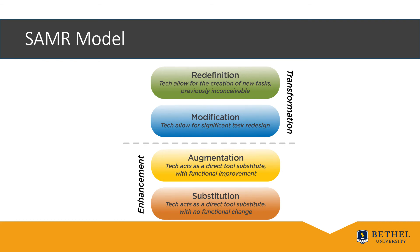Let's take a look at the SAMR model. The SAMR model is a way to represent the different outcomes and purposes of using technology tools. The bottom of the diagram is considered the most basic form of tech integration. As you move up the diagram, the use of technology represents more and more advanced integration. Sometimes you want to be at the substitution level — that is not necessarily bad. The bottom two, substitution and augmentation, really have enhancements in mind, meaning we're taking something we did before and enhancing it with technology. Transformation at the top of the SAMR model includes modification and redefinition, which are about truly transforming the educational learning experience.